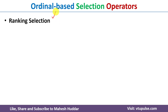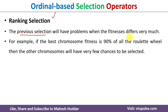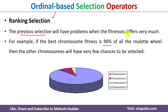Moving to ordinal-based selection, the first technique is ranking selection. The previous techniques — roulette wheel and stochastic universal sampling — have problems when there is a huge difference between the fitness values of different chromosomes. For example, if one chromosome has 90% of the total fitness and the remaining all have only 10%, the roulette wheel gives the dominant chromosome almost all the slices. Whenever you rotate it, that chromosome is selected again and again — that is the problem.